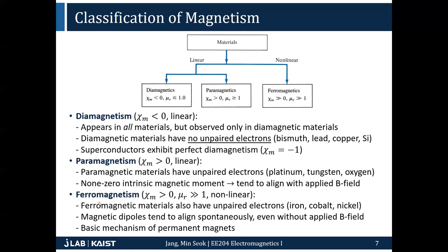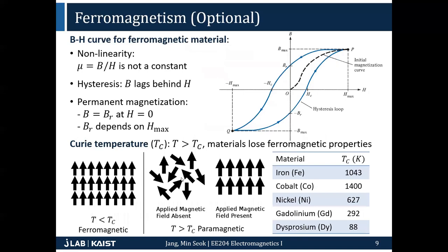Ferromagnetism is a fairly different kind — it shows nonlinear behavior. As you increase the external H field, B also increases. But the strange thing is that even when you weaken the applied magnetic field to zero, the B field is still present. That means you have a magnetization, and your material has become a permanent magnet — it produces a magnetic field even without an applied field.